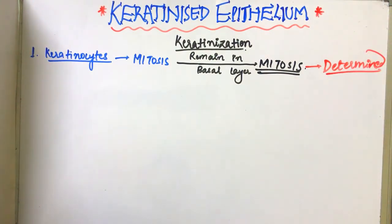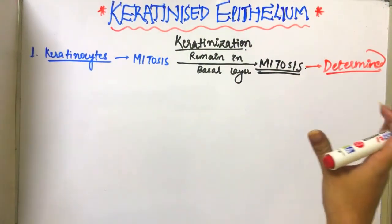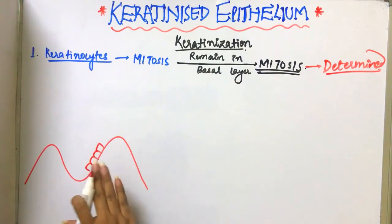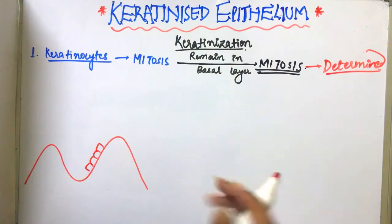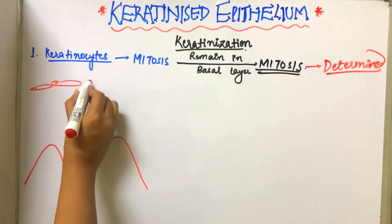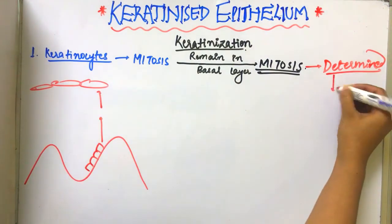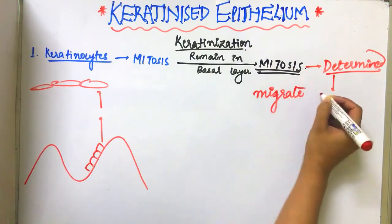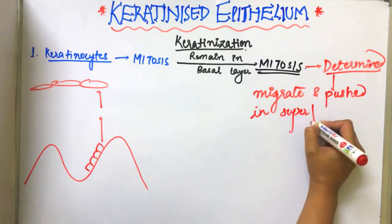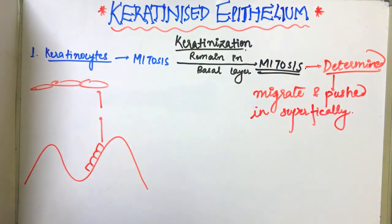Now, once the keratinocytes have become determined, they will migrate and are pushed towards the surface. In the epithelium, keratinocytes in the basal layer are dividing and undergoing mitosis. Once they become determined and can no longer divide, they are pushed towards the superficial cell layer. This is the first process taking place: mitosis.